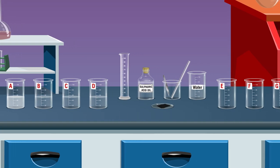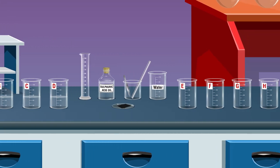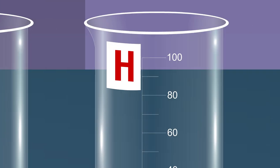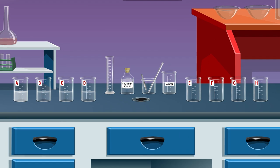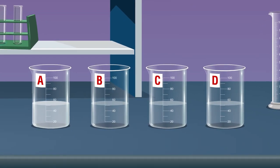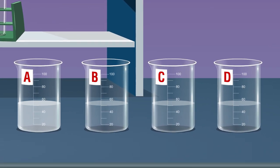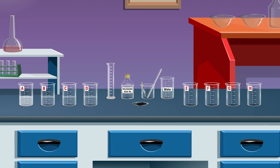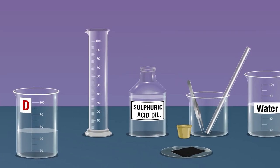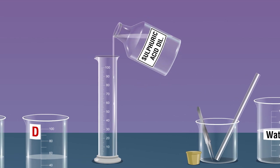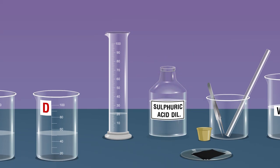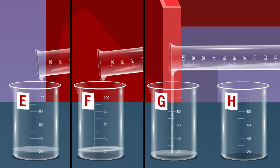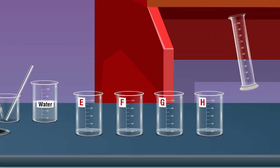Place eight beakers on the workbench and mark them as A, B, C, D, E, F, G, H. Prepare about 50 ml of 5% solution of each of the four given chemical samples in beakers A, B, C, and D. In beakers E, F, G, H, add 20 ml of dilute sulfuric acid in each beaker.